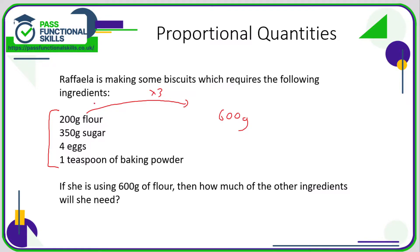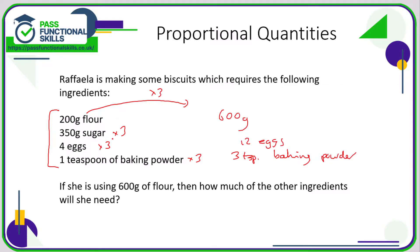So basically she's tripling the recipe, and therefore she will need to triple every other ingredient to make biscuits that taste nice. She's going to need 3 teaspoons of baking powder, 12 eggs, and for the trickiest calculation: three lots of 350g of sugar. 350 multiplied by 3 is 1050 grams of sugar. We're just scaling the recipe up three times.